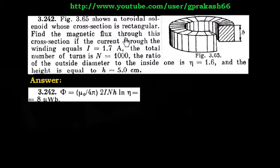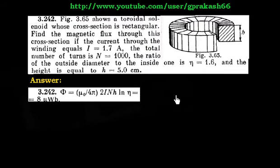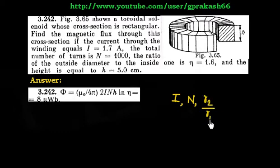We have to find the magnetic flux through this cross section. If the current through the winding is I, this current I goes through the rectangular toroid. The total number of turns is N. So what is given to us: I is given, number of turns N is given, the ratio of outer diameter to inner diameter R2 by R1 equals η is given, and the height of the toroid H is also given.